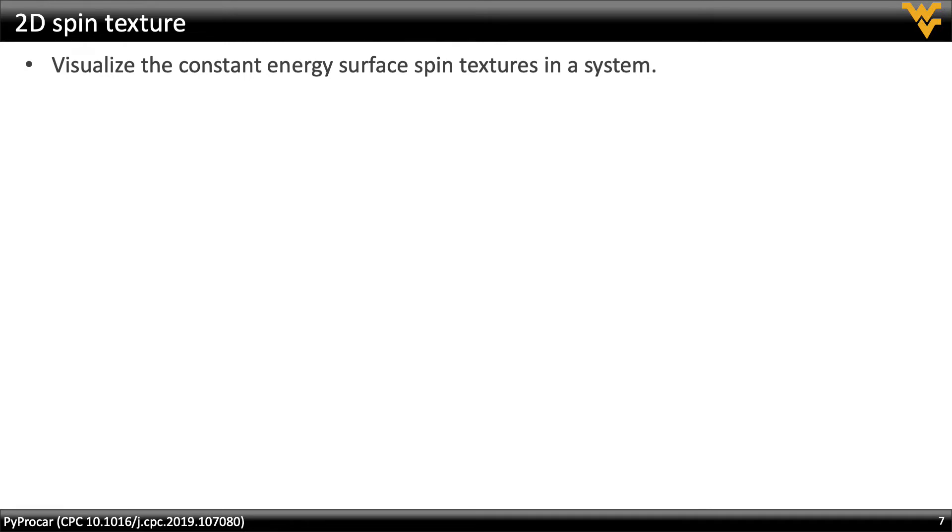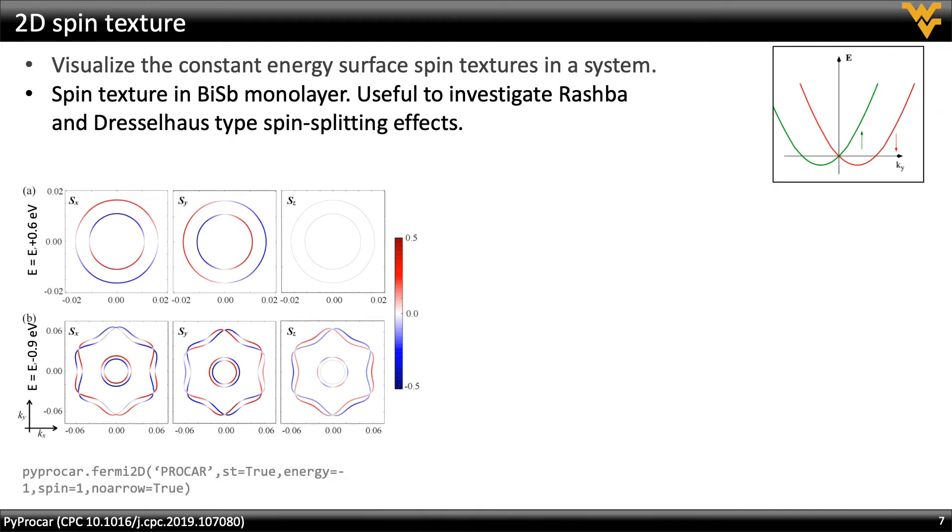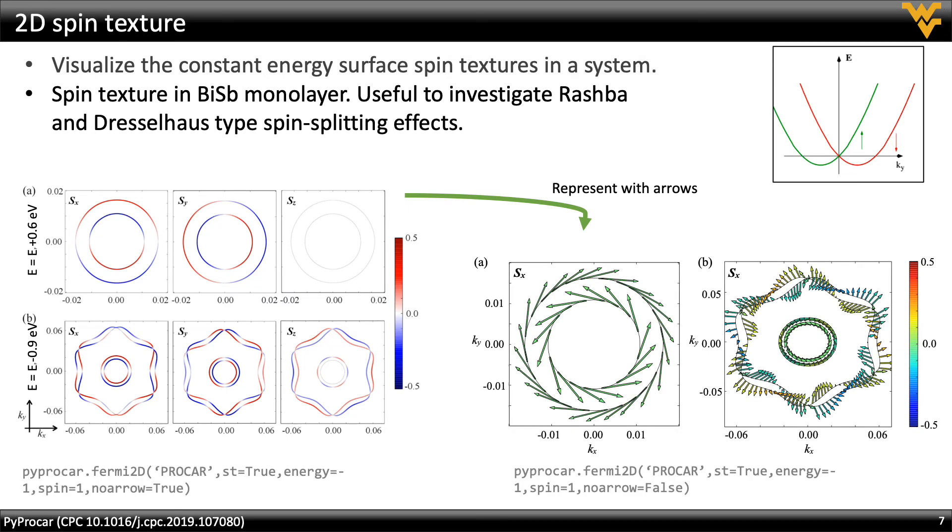The 2D spin texture plotting is a helpful visualization to investigate spin orbit coupling effects such as Rashba and Dresselhaus spin splitting. The spin texture can also be represented with arrows instead of a color map.